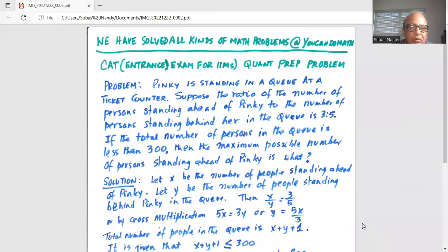Pinky is standing in a queue at a ticket counter. Suppose the ratio of the number of persons standing ahead of Pinky to the number of persons standing behind her in the queue is 3 to 5. If the total number of persons in the queue is less than 300 then the maximum possible number of persons standing ahead of Pinky is what?